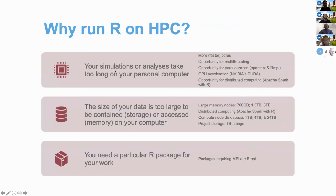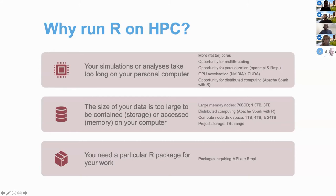One reason might be that your simulations or analyses are taking too long on your workstation or personal computer, and you might want to consider using OSC. We have more cores that you can use, and these cores are quite fast — Intel cores with speeds in the range of 3 GHz. Just using one core on OSC would cut down the wall time you might spend using your workstation. You also have the opportunity for multi-threading by using multiple cores on a particular node, and also parallelization where you can request more than one compute node and spread your job across different nodes using OpenMPI. Specifically for R, you can use the RMPI package for that.